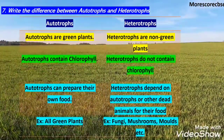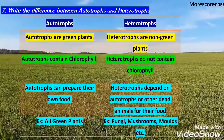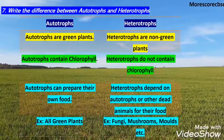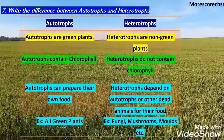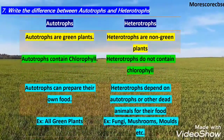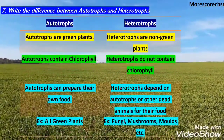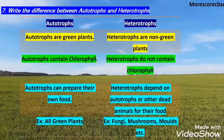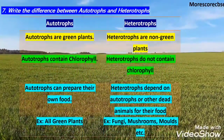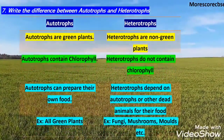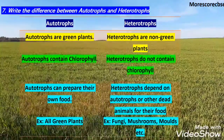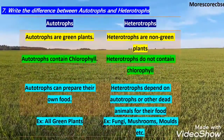This table shows the basic difference between autotrophs and heterotrophs. Autotrophs are green plants; heterotrophs are non-green plants. Autotrophs contain chlorophyll and prepare their own food — examples are all green plants. Heterotrophs do not contain chlorophyll and depend on other plants and animals for food — examples are fungi, mushroom, and moss.